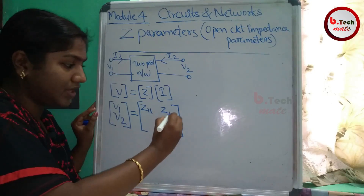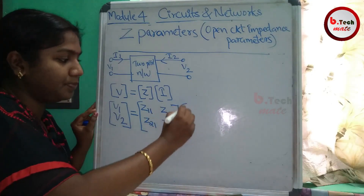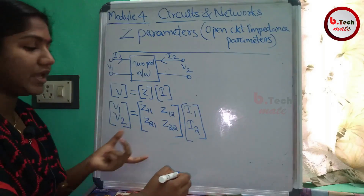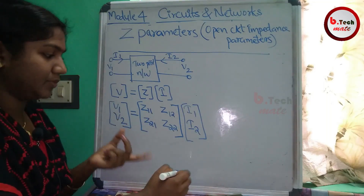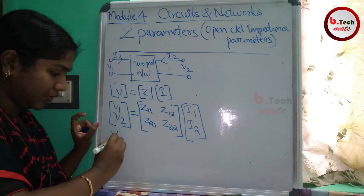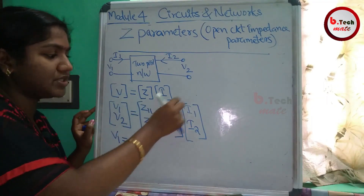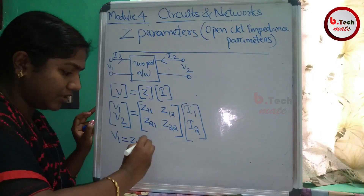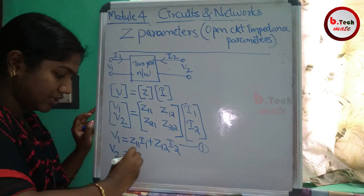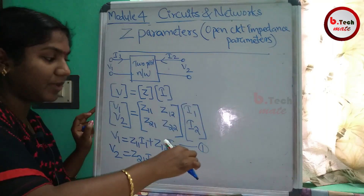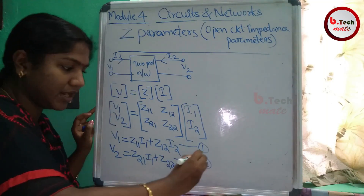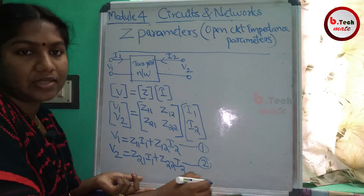For a two-port network, the impedance matrix is of order 2x2: Z11, Z12, Z21, Z22. This is the basic matrix equation. Expanding this matrix, V1 equals Z11·I1 plus Z12·I2 — this is equation 1. And V2 equals Z21·I1 plus Z22·I2. These are the two fundamental equations from which we find the Z-parameters.